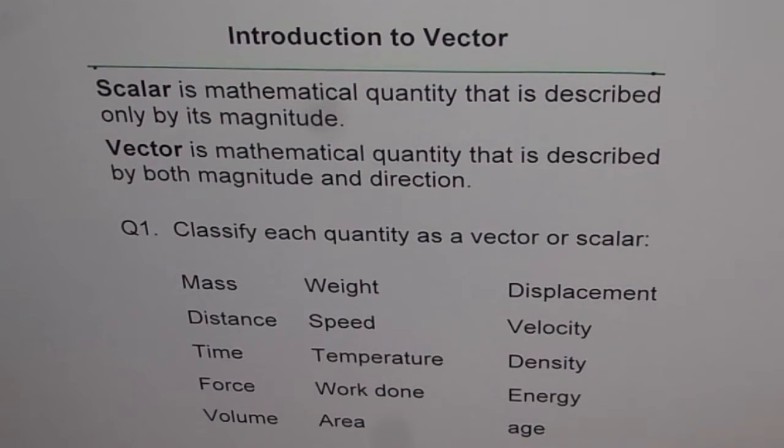If it is a scalar quantity, you don't need a direction. For example, if you want to measure the length of something, it is always positive and we don't have to give any direction to it.